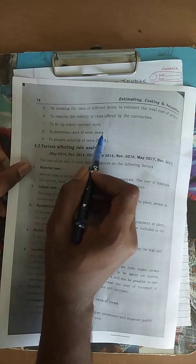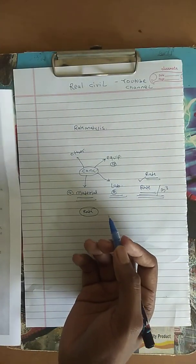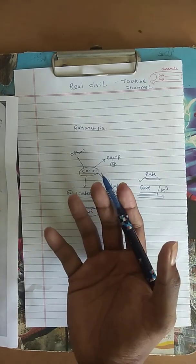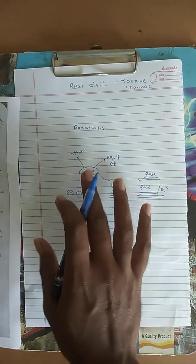Then to determine the rates of extra items. Suppose any extra item is required - suppose you are doing the excavation and there is some groundwater, so you have to remove that water before concreting, so that pumping will be required, so you have to add these extra items also.